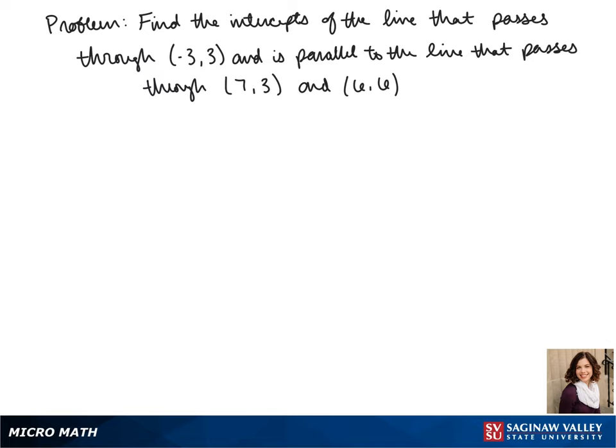Welcome to another day of algebra. Today we'll be finding the intercepts of the line that passes through (-3, 3) and is parallel to the line that passes through the points (7, 3) and (6, 6).